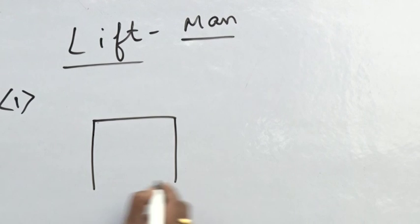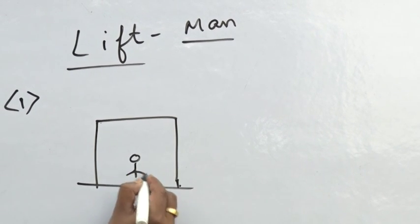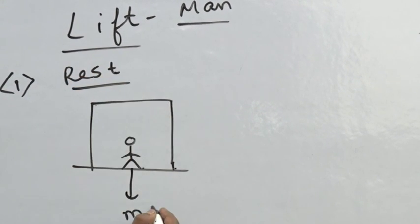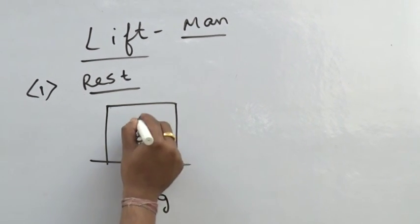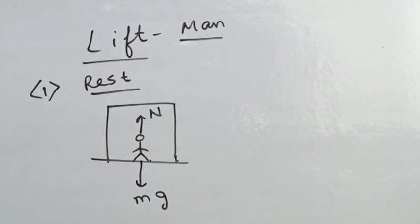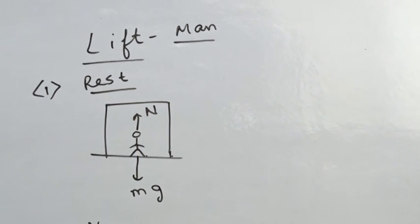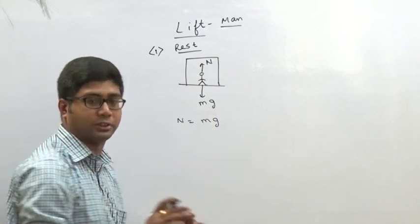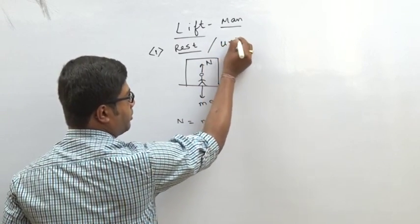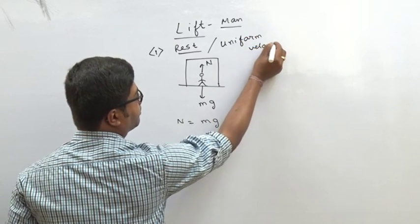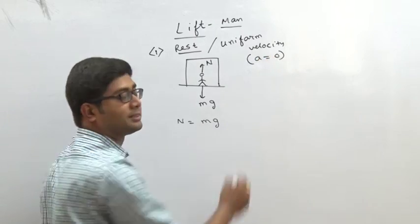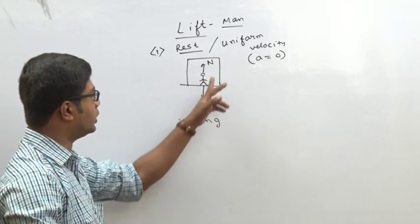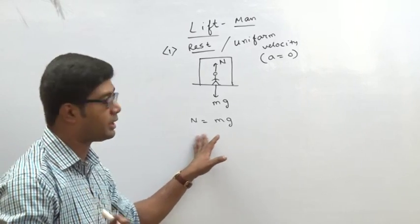Case 1: Lift at rest. A man is inside the lift. Downward force is mg, upward is the normal reaction N. Since the lift is at rest, acceleration is 0, meaning no external net force. Rest or uniform velocity both give the same result: N equals mg. Here N is the apparent weight and mg is the original weight.